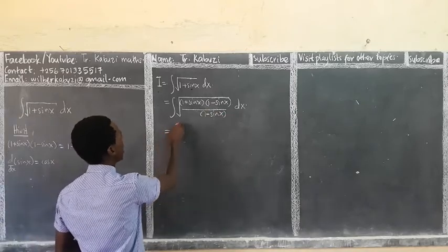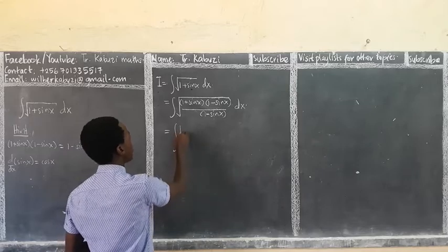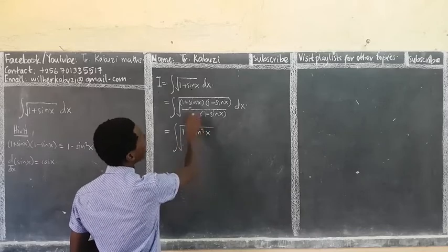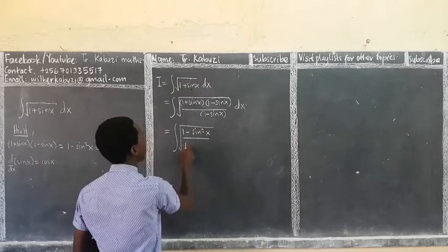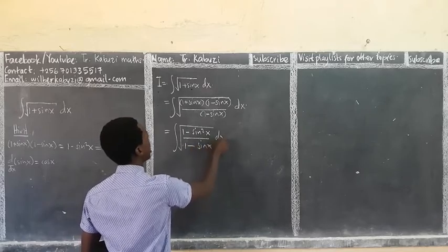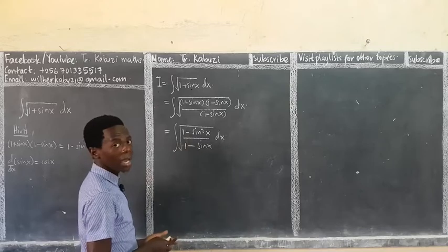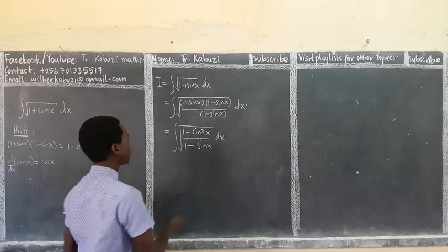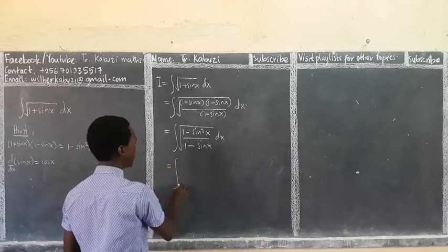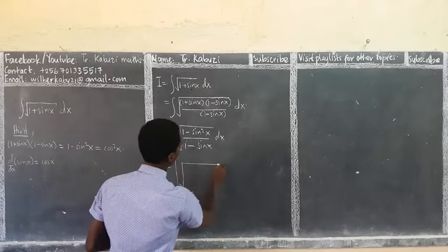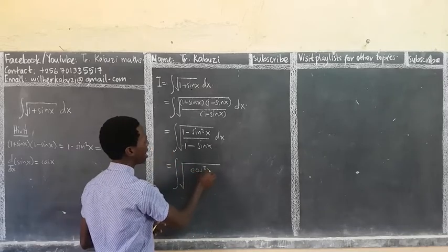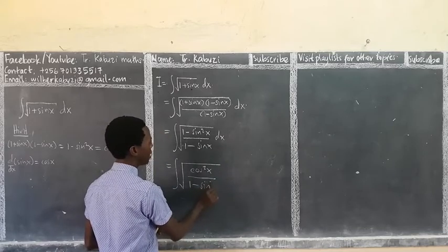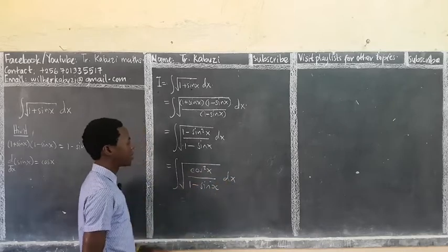Looking at this, we automatically apply the difference of two squares to the numerator. This becomes the integral of √[(1 - sin²x) / (1 - sin x)] dx. We know that 1 - sin²x equals cos²x, so the numerator under the root becomes cos²x. So now we have √(cos²x) all over (1 - sin x), dx.